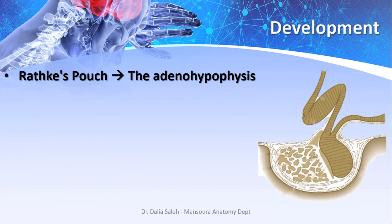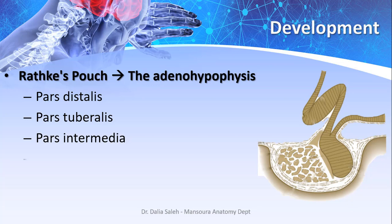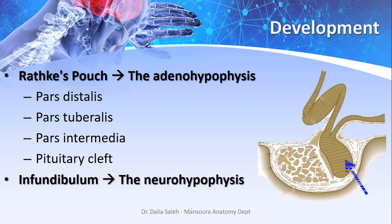Rathke's pouch will eventually give us the adenohypophysis, and differentiates into: pars distalis; pars tuberalis, which wraps around the infundibular stem — together forming the pituitary stalk; and the pars intermedia, which remains narrow and becomes rudimentary in humans, separated from the pars distalis by the pituitary cleft. The infundibulum will give us the neurohypophysis — the posterior lobe — which remains connected to the undersurface of the brain by the infundibular stem, inside which lies the infundibular recess of the third ventricle.